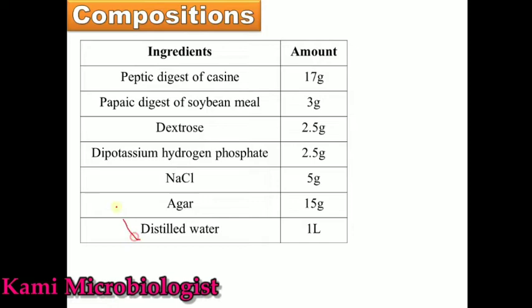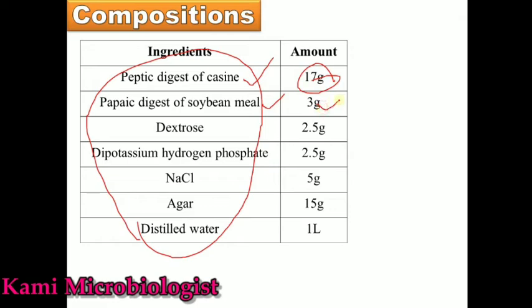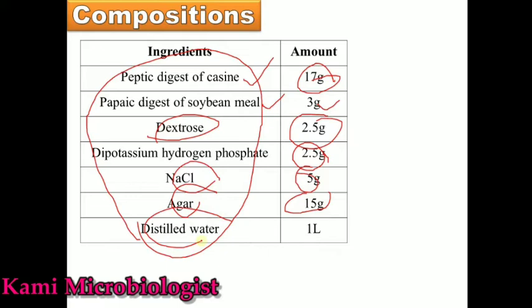Now for the composition: the most important ingredients per one liter are — peptic digest of casein: 17 grams; peptic digest of soybean meal: 3 grams; dextrose: 2.5 grams; dipotassium hydrogen phosphate: 2.5 grams; sodium chloride: 5 grams; agar: 15 grams; and distilled water: one liter. Mix all ingredients, heat-mix it, autoclave it, pour it, and then use it for bacterial isolation.